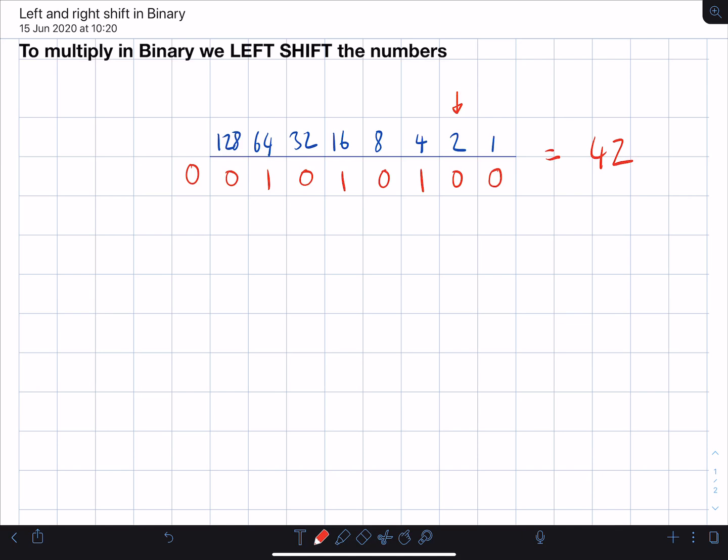Previously, that number was 42. And what we've done is we've moved it along. We've left shifted by 1, which is times by 2, multiplied by this number 2. So what we should have now is the binary for double that, which double 42 is 84. So let's add up the binary and see if we've got 84 here. We've got 64 plus 16 plus 4, which gives us 84.